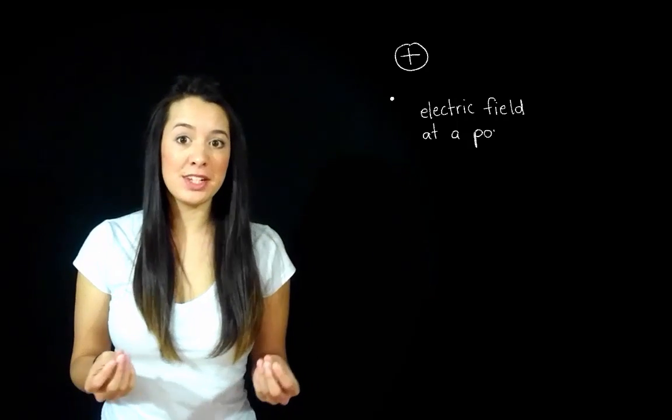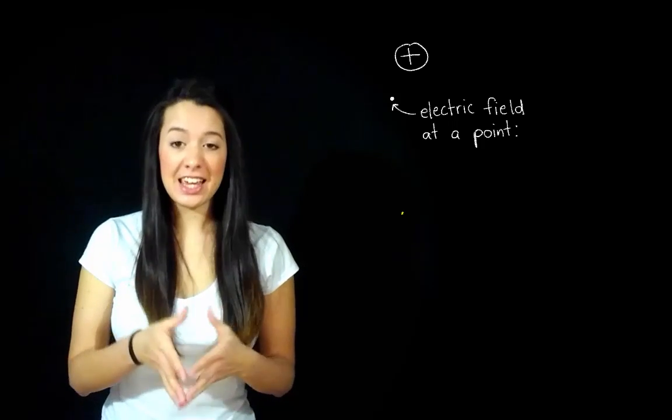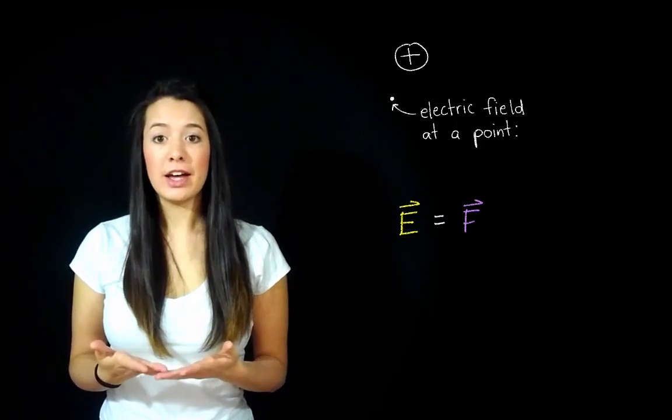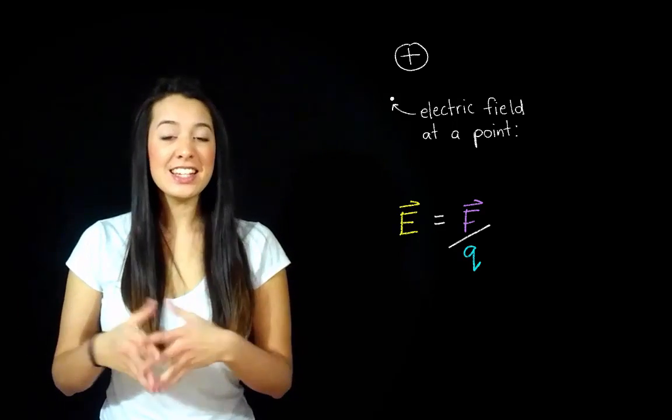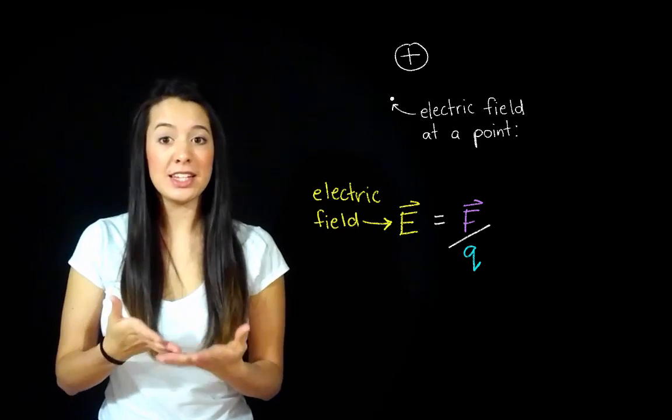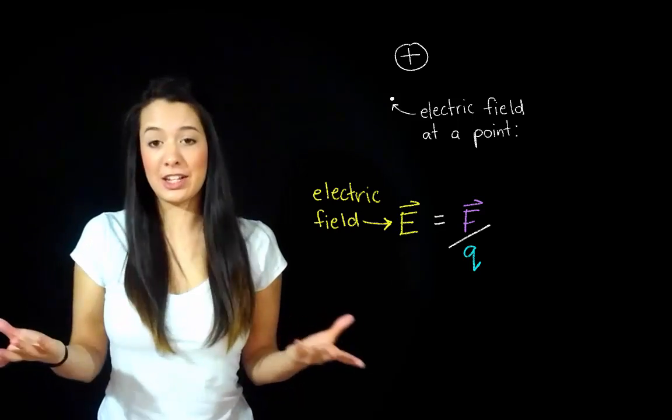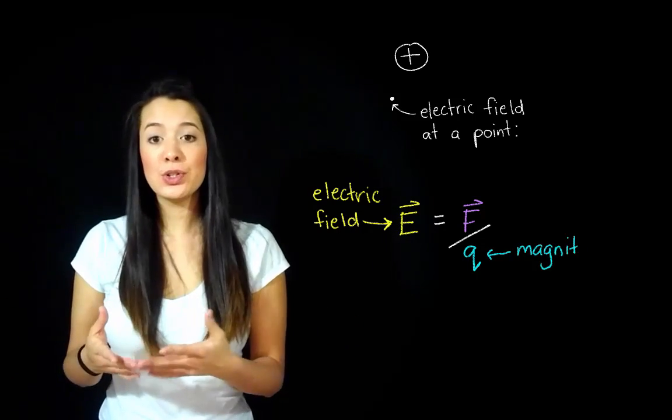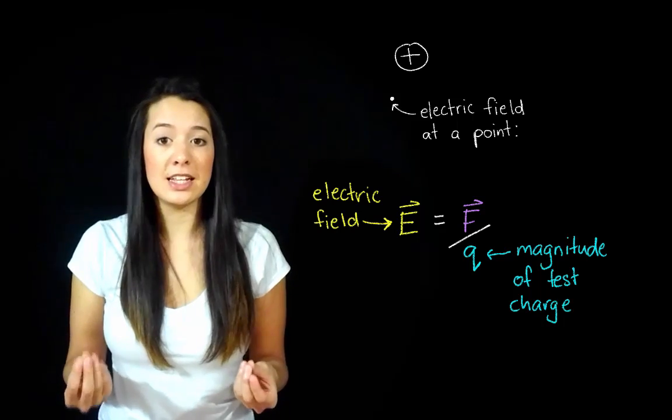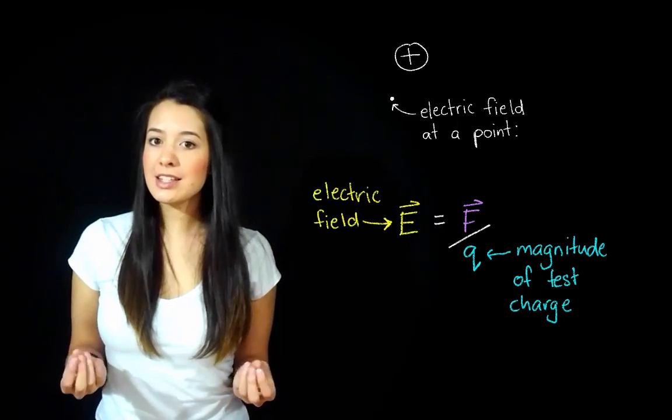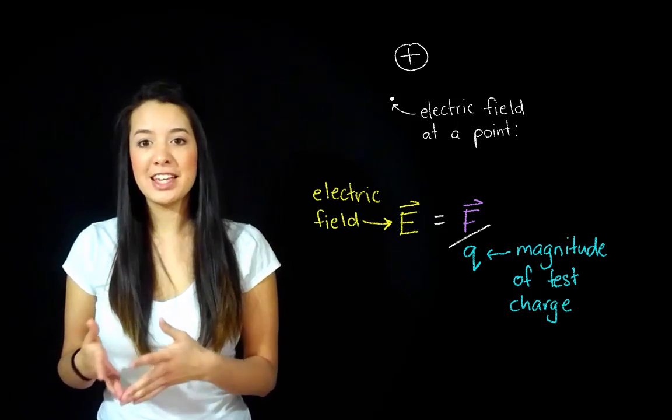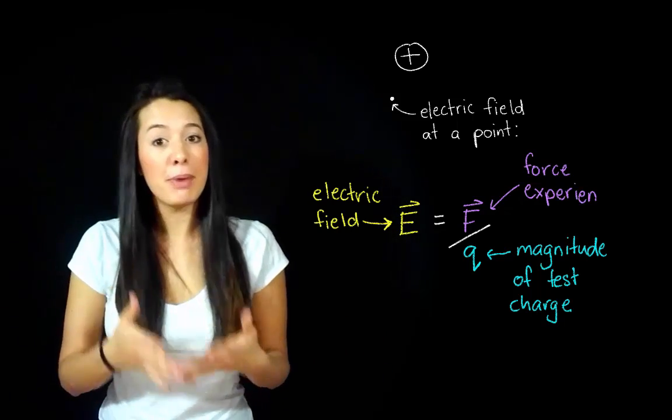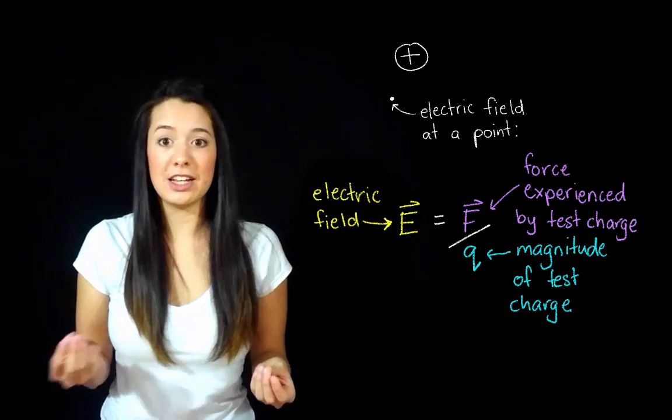So the formal definition of an electric field at a particular point is E is equal to F divided by Q. So let me break this down. E is the electric field and we can see that it's a vector field as it has direction. Q is the magnitude of a test charge placed in the electric field. So in this case it was Ethel but it can be any magnitude or any test charge. F is the force experienced by the test charge due to the electric field.